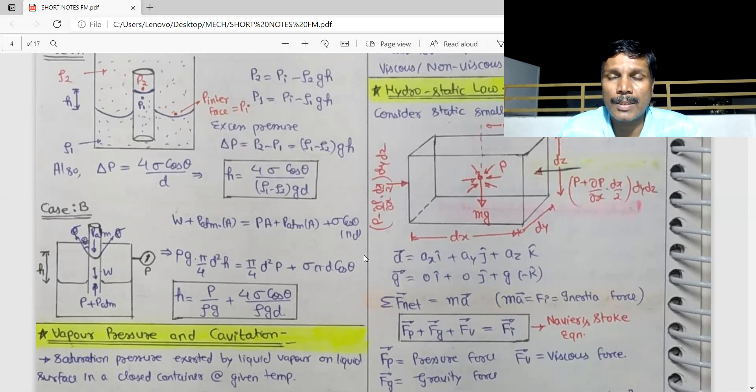The total pressure acting on the free surface under equilibrium condition is termed as vapor pressure or saturation pressure exerted by the liquid vapor on liquid surface in a closed container at a given temperature. Saturation pressure.